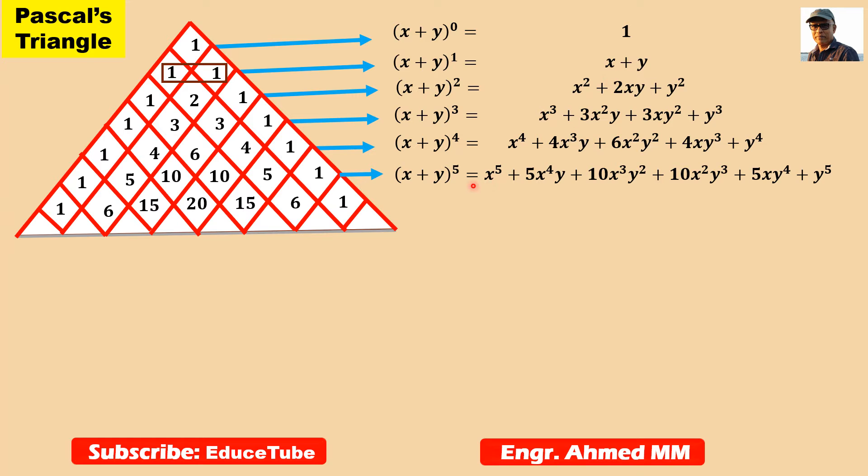One important thing here - if you look at these equations, they look like a triangle also. To compare, look at the coefficients: one, three, three, one matches one, three, three, one. For the fourth line: one, four, six, four, one matches one, four, six, four, one. For the fifth: one, five, ten, ten, five, one matches one, five, ten, ten, five, one.